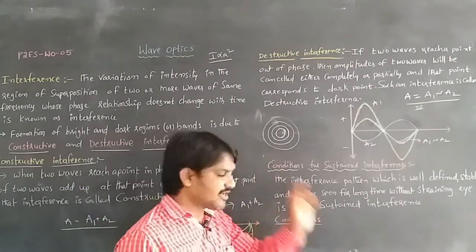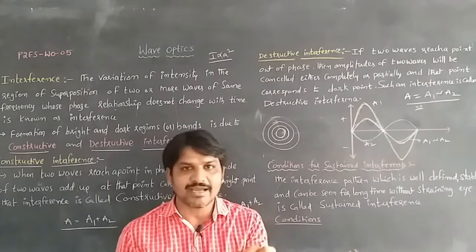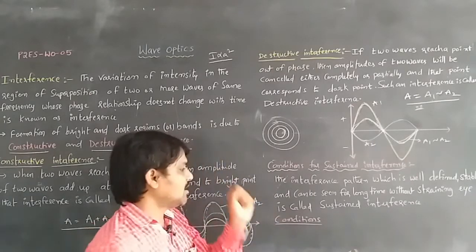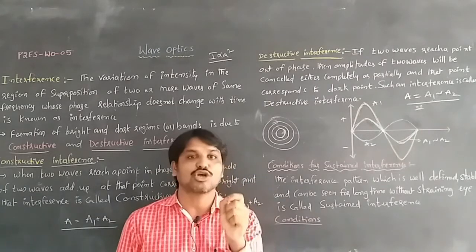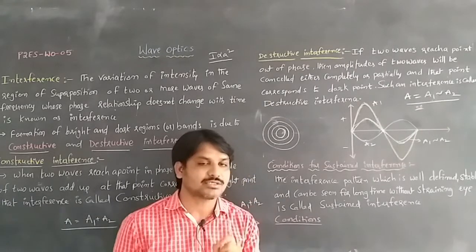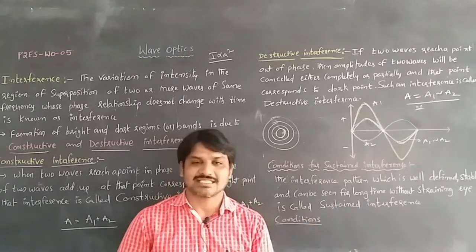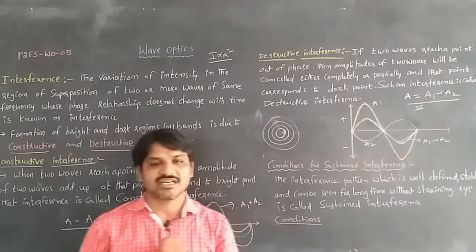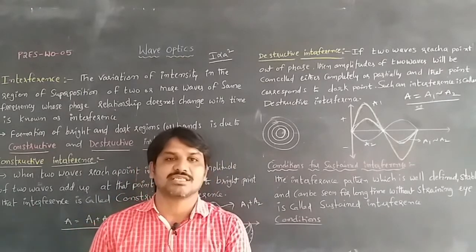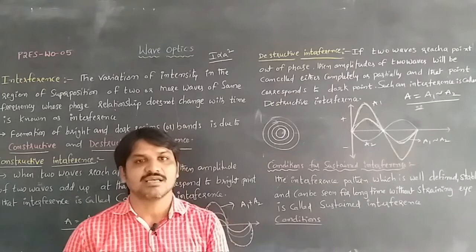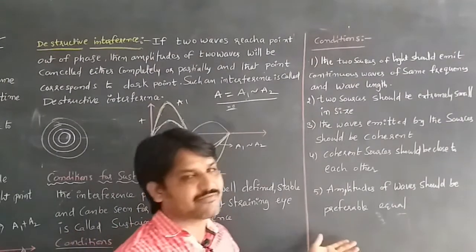The interference pattern should be stable and well-defined, and should be able to be seen for a long time without straining our eye — that is sustained interference. For sustained interference there are some conditions. There are five conditions for sustained interference.